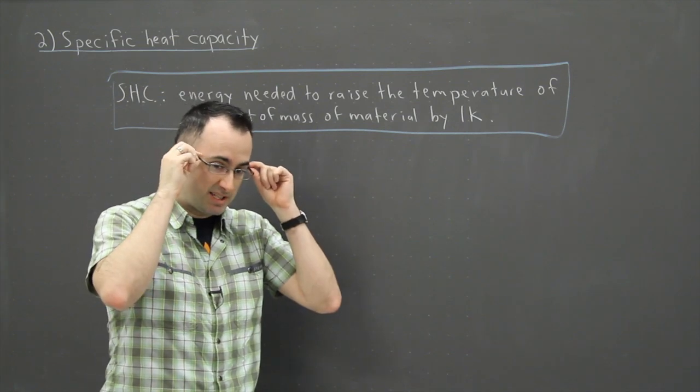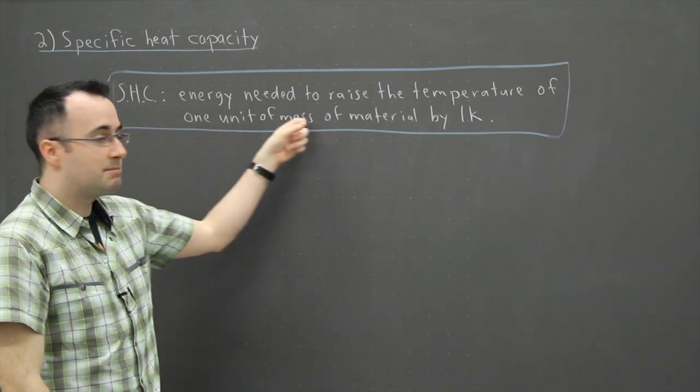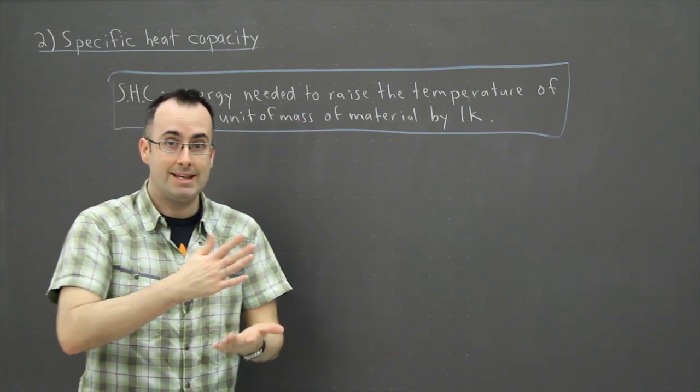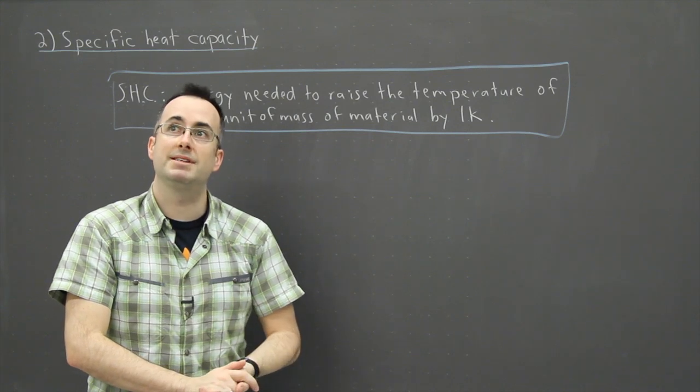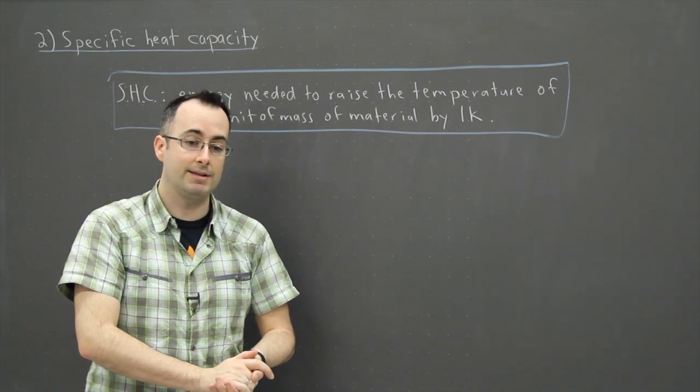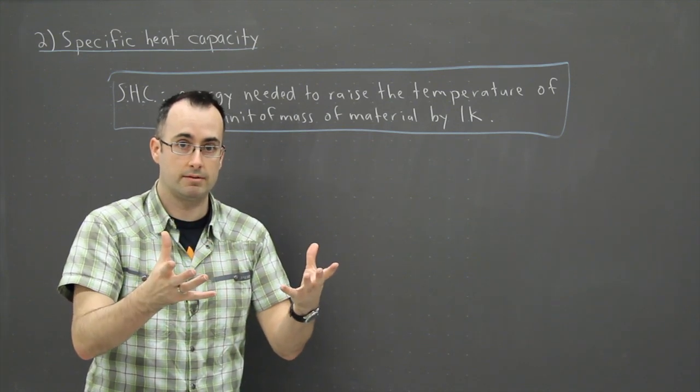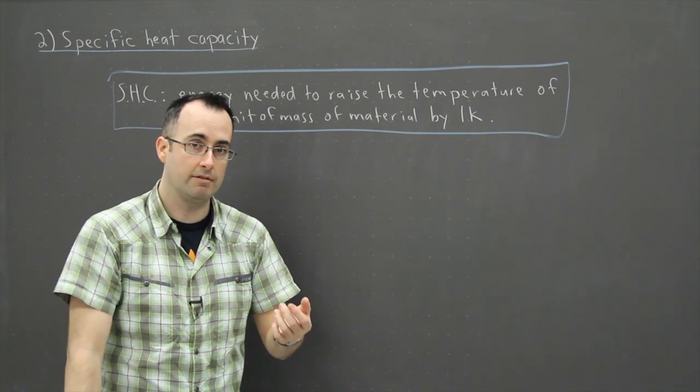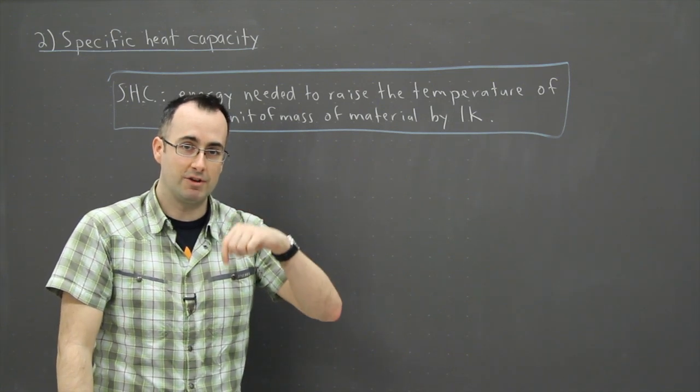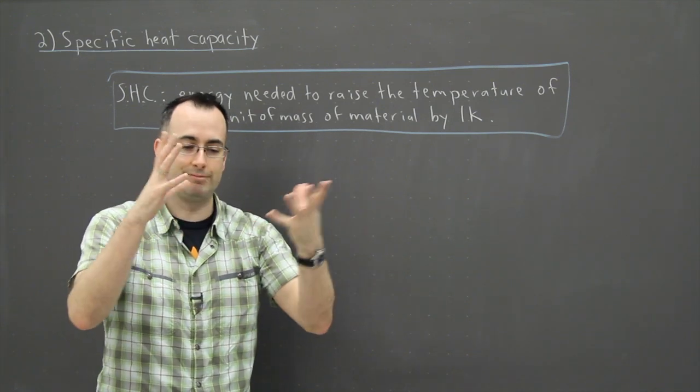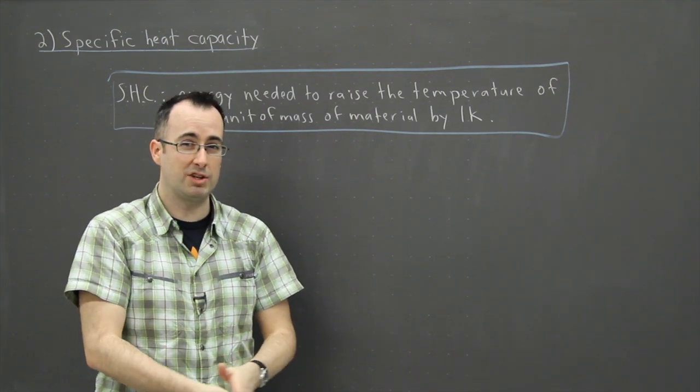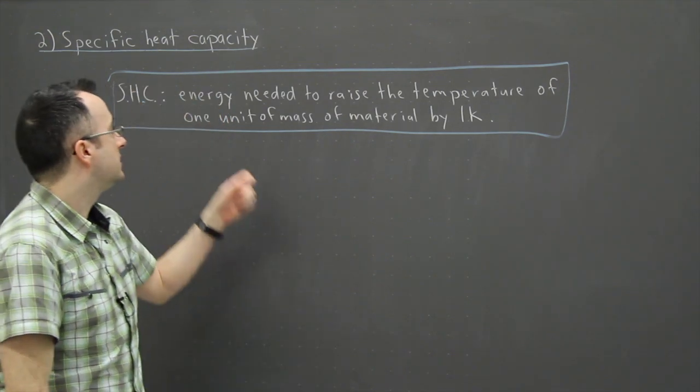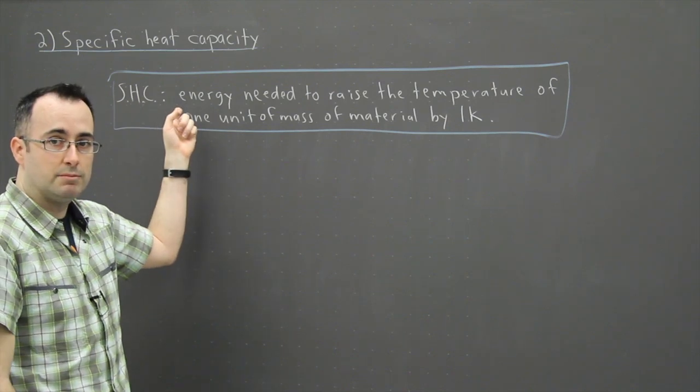The reason why it's called specific is because that's related to its mass. If you just had heat capacity without the word specific, then that would be simply the amount of energy needed to raise the material temperature by one degree Kelvin. There we're not doing it for each kilogram, we're doing it for the whole block of ice or whatever you're looking at. But almost always, especially in physics SL, you'll see specific heat capacity being referenced.